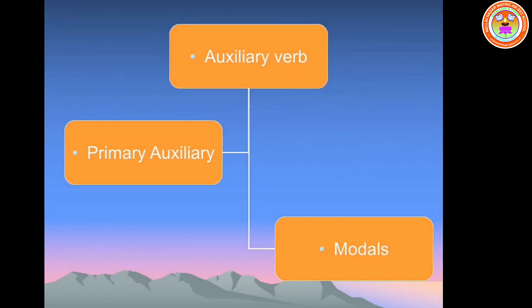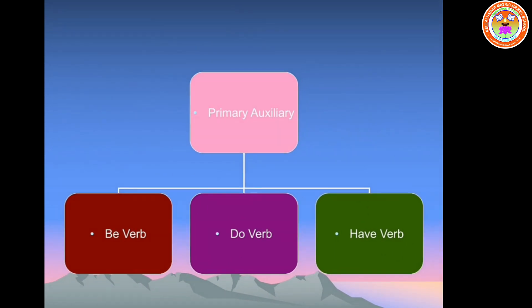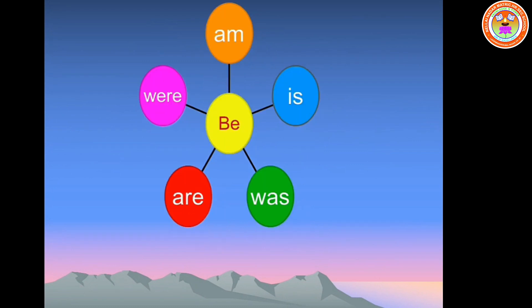There are two types of auxiliary verb: primary auxiliary and modals. Be, do and have are the primary auxiliaries. The be verbs are am, is, was, are, were. Be is an irregular verb with several forms.